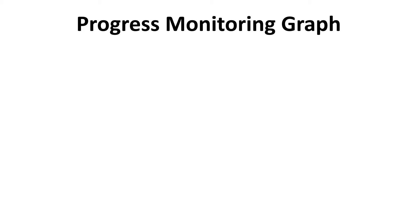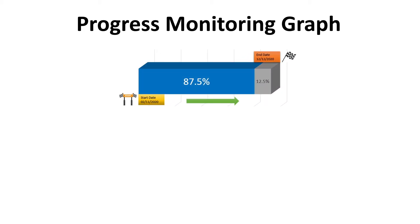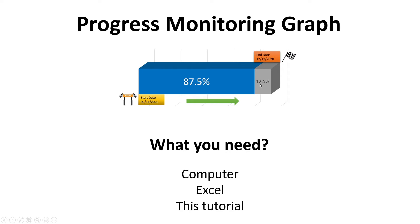You can update it as you move along the project. This is how it will look: it will have a start date and end date of the project and a progress bar which shows how much work has been done and how much work still needs to be done. All you need is a computer, Excel, and of course this tutorial.